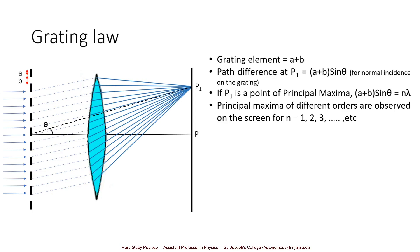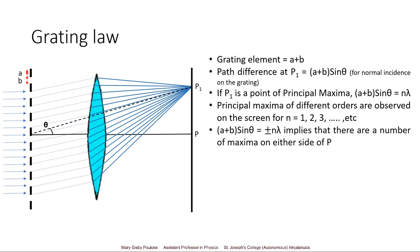The principal maxima of different orders can be obtained by giving values of n = 1, 2, 3, etc. When n = 1, we have the first principal maxima where path difference equals λ. When n = 2, we get the second principal maxima where path difference equals 2λ. In between the principal maxima there will be a number of secondary maxima and minima depending upon the number of slits. The equation (a + b)sinθ = ±nλ implies there are principal maxima on either side of the central point.